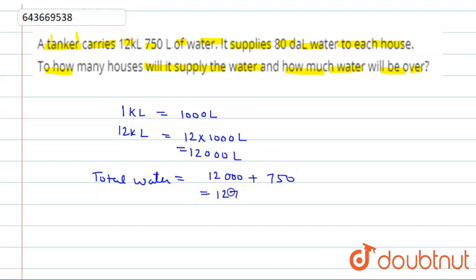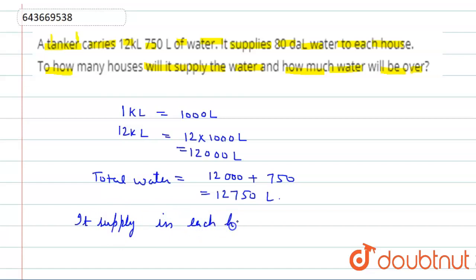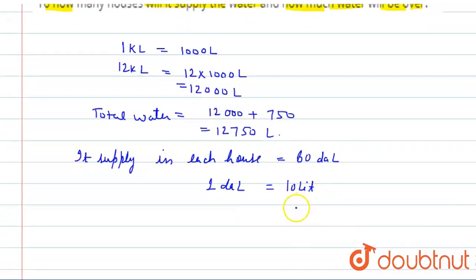The supply to each house is 80 dekaliters. Since 1 dekaliter equals 10 litres, the supply per house is 80 × 10 = 800 litres.